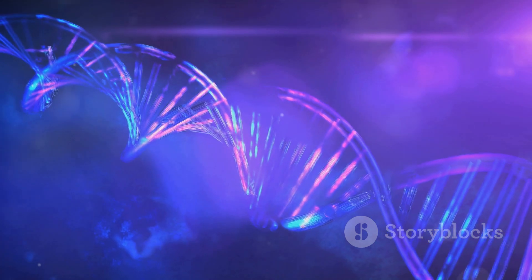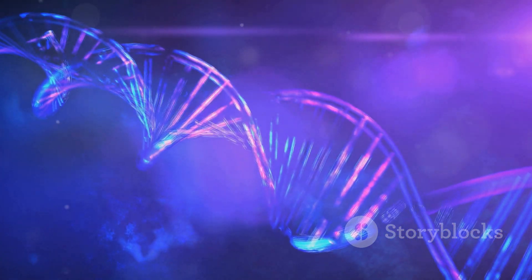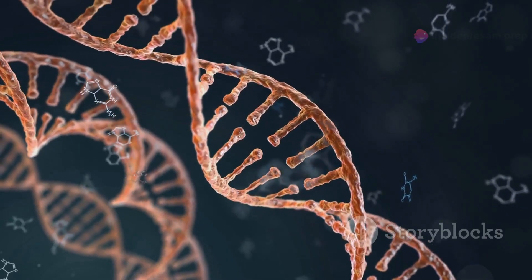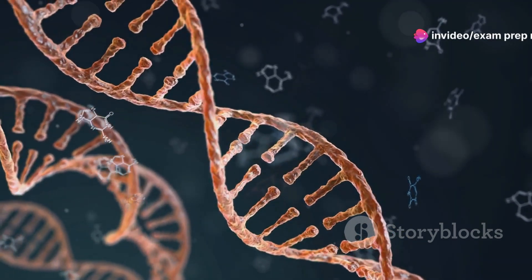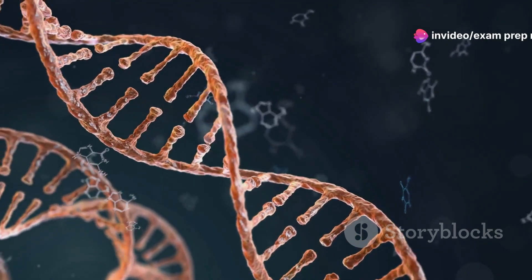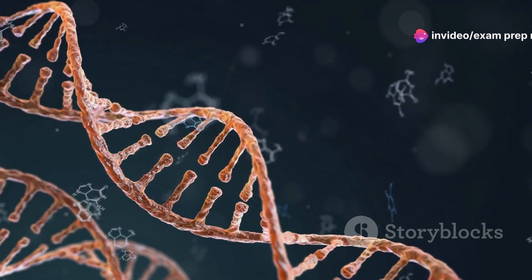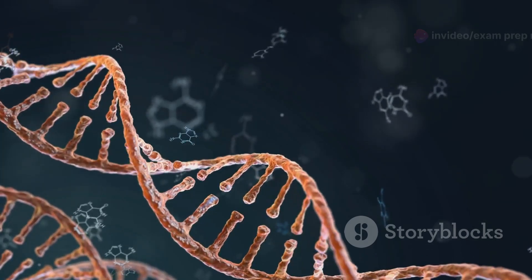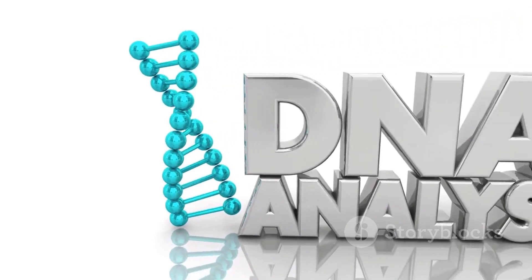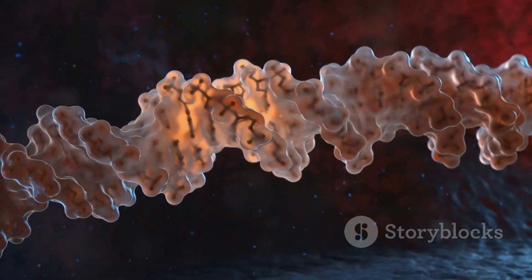Free-floating nucleotides pair up with their complementary bases on the template strands, following the strict base pairing rules: A with T and G with C. This process is carried out by a team of specialized enzymes that work with incredible precision, ensuring that the newly synthesized DNA molecules are exact replicas of the original. DNA replication is a testament to the elegance and efficiency of molecular processes, ensuring the faithful transmission of genetic information across generations.